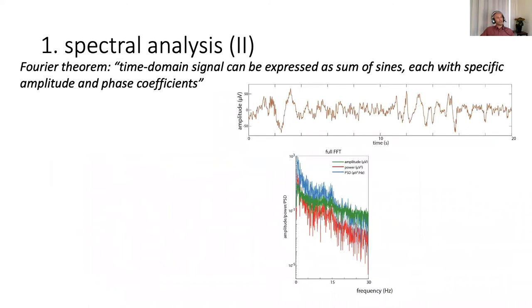So how do we calculate the power spectrum? Very roughly speaking, the time domain signal can be expressed as a sum of sines, each with specific amplitude and phase coefficients. Here I'm showing you 20 seconds of N2 sleep, and below I'm showing the full spectrum expressed in three different ways. One thing you can already notice is that these traces look really noisy, and the reason is that the frequency resolution of your power spectrum is essentially dictated by the number of samples in your time domain signal.